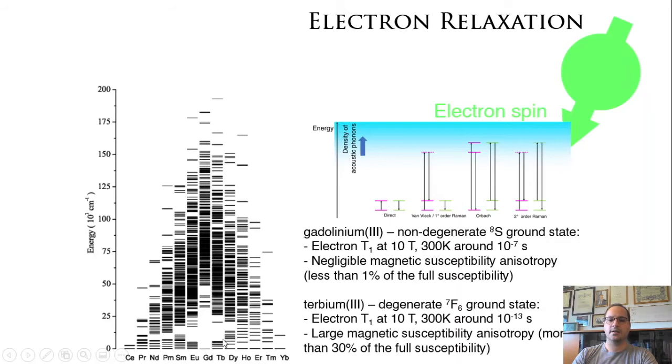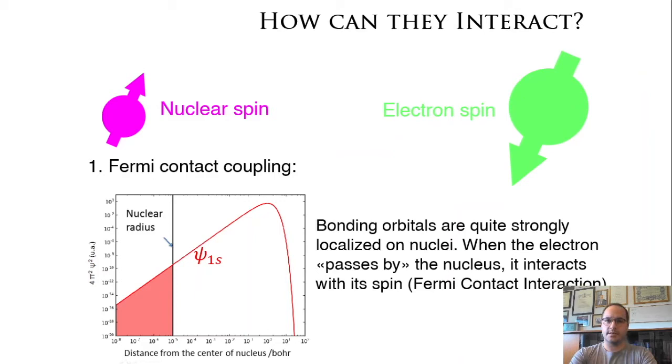How can nuclei and electrons interact? The first thing that you can think of is that since bonding orbitals are quite strongly localized on nuclei, when the electron passes by the nucleus, it interacts with its spin. This is called the Fermi contact interaction.